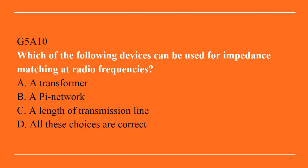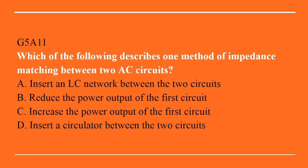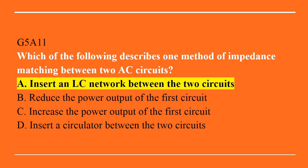G5A10: which of the following devices can be used for impedance matching at radio frequencies? A. A transformer. B. A pi network. C. A length of transmission line. Or D. All of these choices are correct. The answer is D: all of these choices are correct. G5A11: which of the following describes one method of impedance matching between two AC circuits? A. Insert an LC network between the two circuits. B. Reduce the power output of the first circuit. C. Increase the power output of the first circuit. Or D. Insert a circulator between the two circuits. Correct answer is A: insert an LC network between the two circuits.